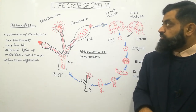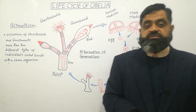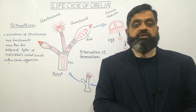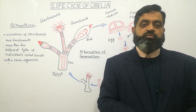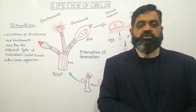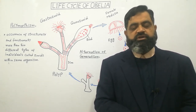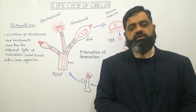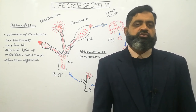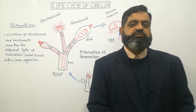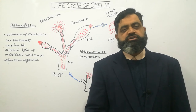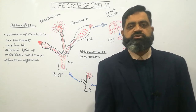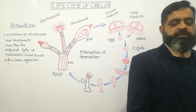So today we have discussed the life cycle and reproduction in Obelia, which is a colonial cnidarian in the animal kingdom. I hope you have understood it. If you did, please like it, subscribe, and share with your friends. See you in the next lecture. Bye.